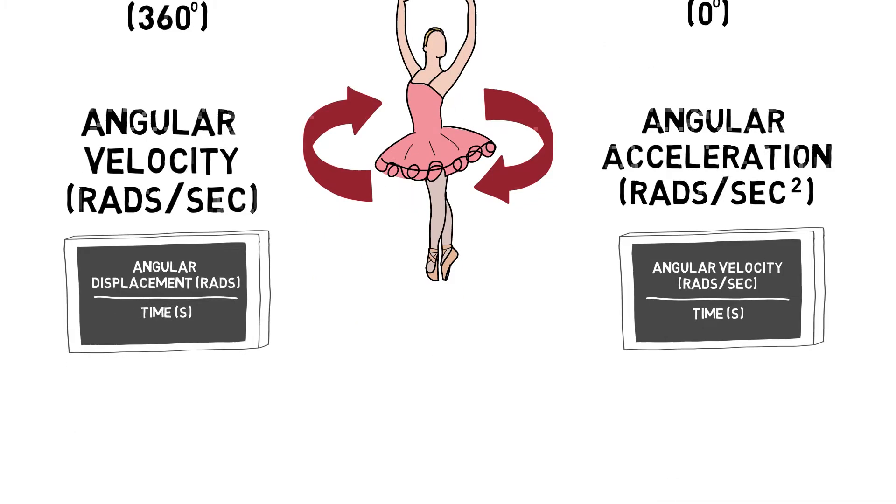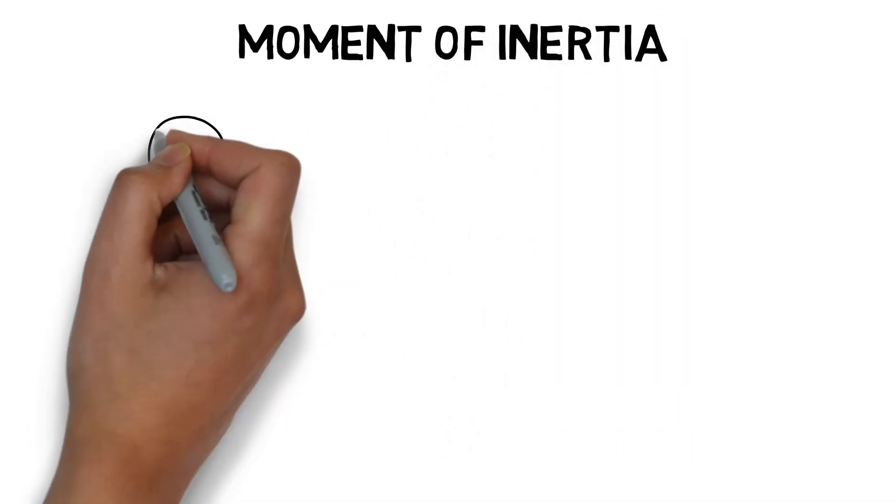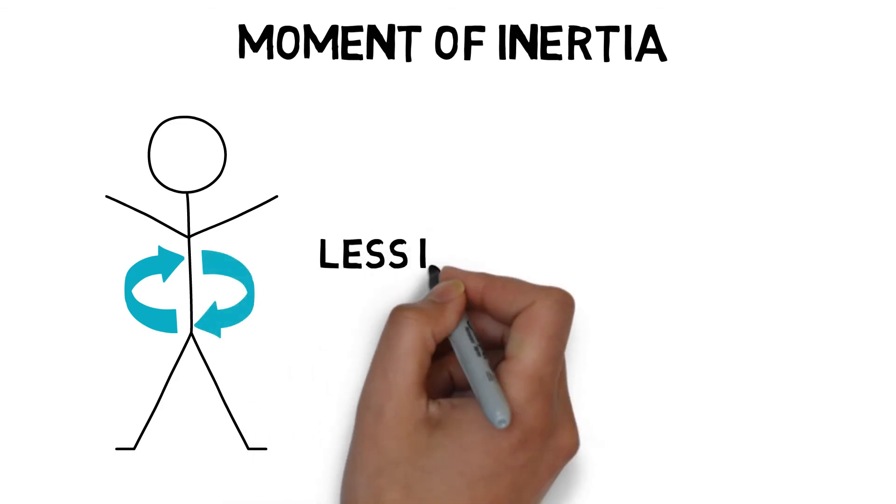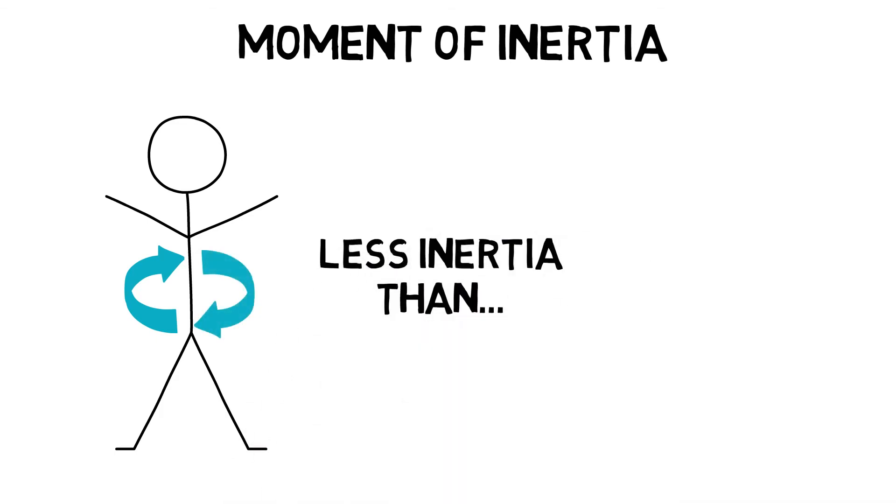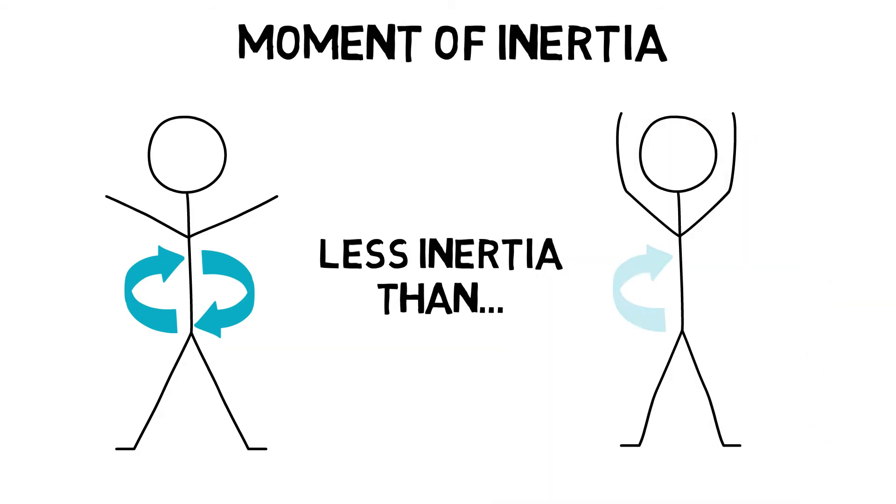Moment of inertia is the resistance of a body to angular motion or rotation. Inertia depends on the mass of the body, the greater the mass, the greater tendency to resist change in its state of motion, and the distribution of mass around the axis. For example, a tucked somersault has a lower moment of inertia than a straight somersault. To increase angular velocity or rate of spin, the athlete needs to bring their mass towards the axis of rotation.